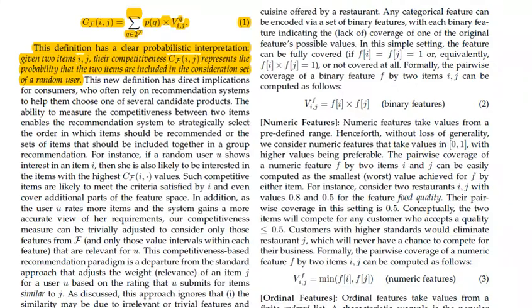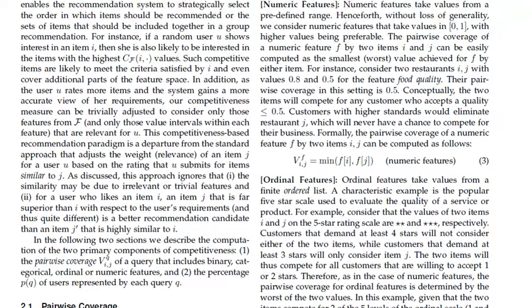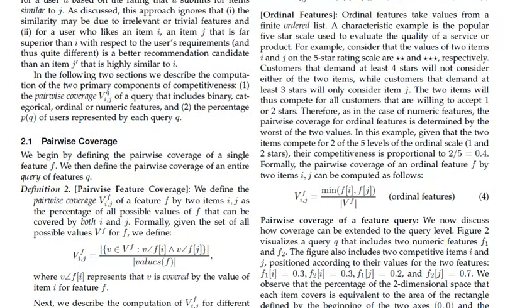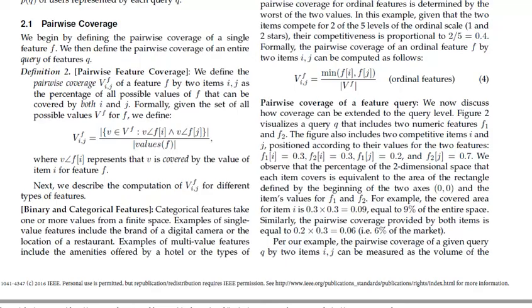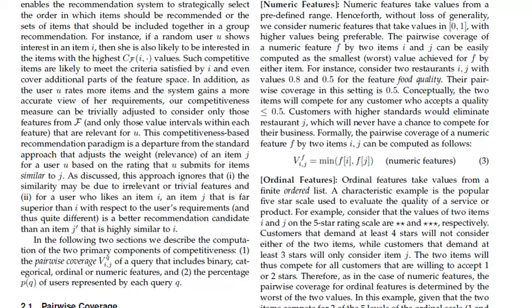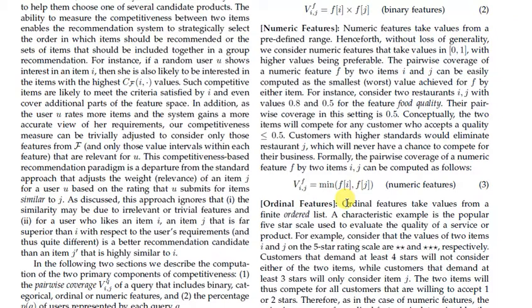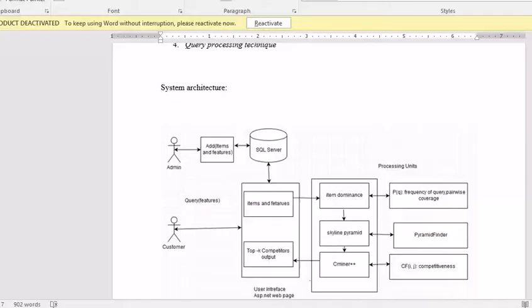The feature types are: binary features, categorical features, numerical features, and ordinal features. Numerical features are floating point values, ordinal features are rating features, and binary features are yes-or-no values. These are the features which are added for an item, and that is done by the admin.